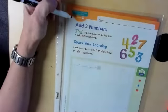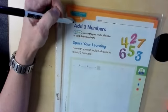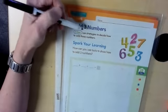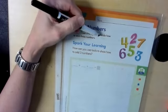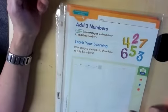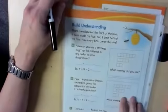Hi guys, today we're talking about Module 3, Lesson 4, and the title of this one is Add Three Numbers. Here's our I CAN statement. I can use strategies to decide how to add three numbers. Let's go ahead and turn in those packets to our second page, Build Understanding.